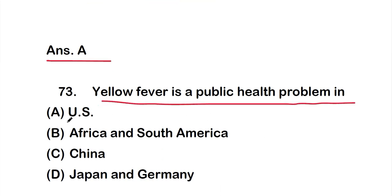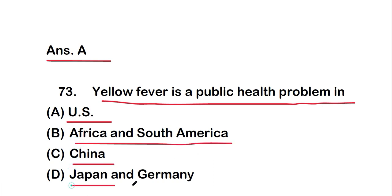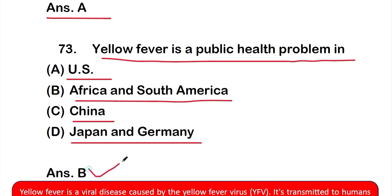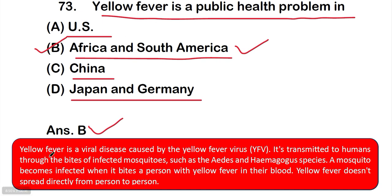Question number 73: Yellow fever is a public health problem in — option A: US, option B: Africa and South America, option C: China, or option D: Japan and Germany. The correct answer is option B, Africa and South America. Yellow fever is a viral disease transmitted to humans through bites of infected mosquitoes such as Aedes and Haemagogus species. It does not spread directly from person to person.